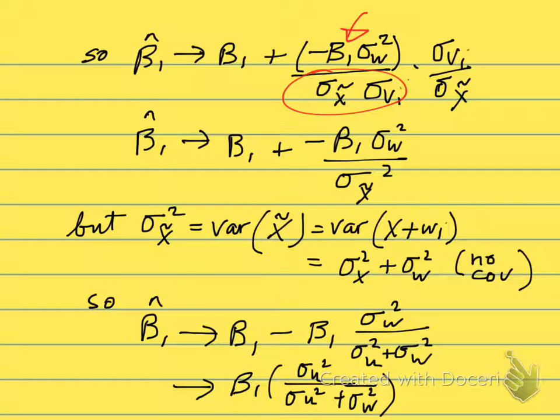Now we do a little bit of canceling. These two cancel, and we have σX̃, σX̃, so that's σ²X̃, and we end up with this expression.